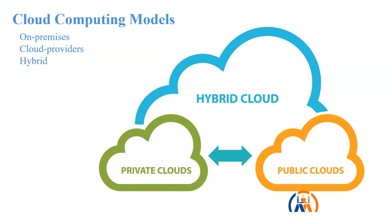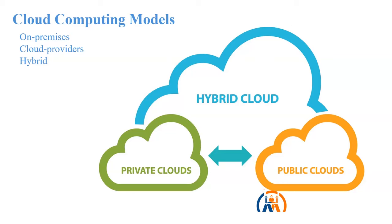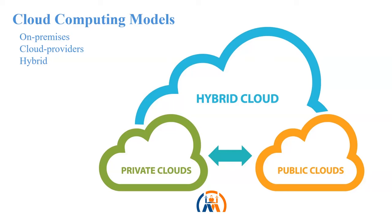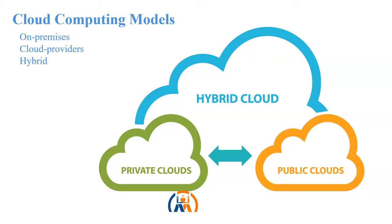The hybrid model is a combination of private cloud — that is on-premises — and public cloud. Organizations that are very sensitive about protecting their internal data keep it secure in their on-premises network, whereas anything that needs to be shared outside the organization can be hosted on public clouds. The combination of these two is called a hybrid cloud.